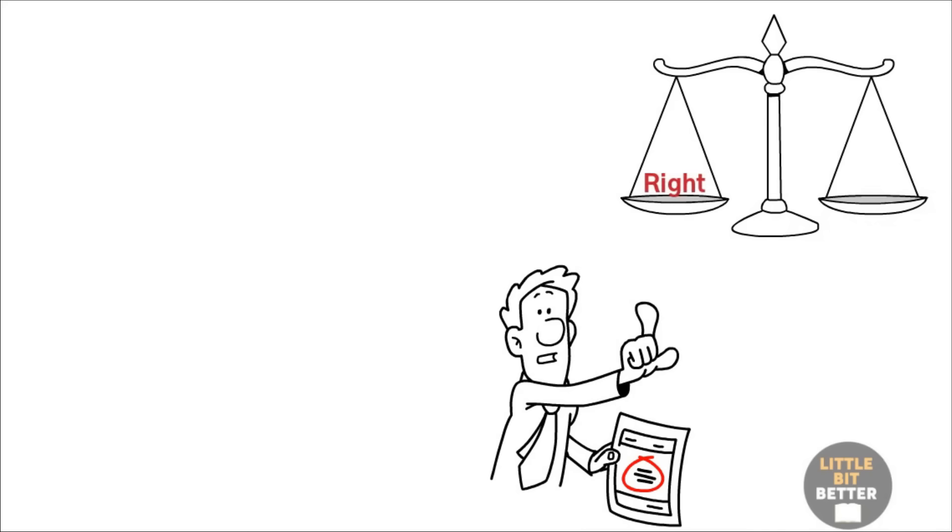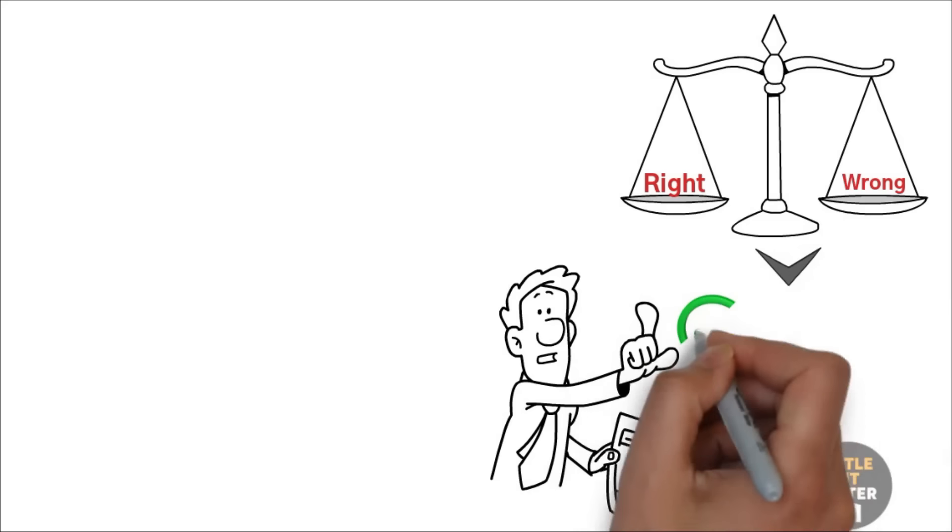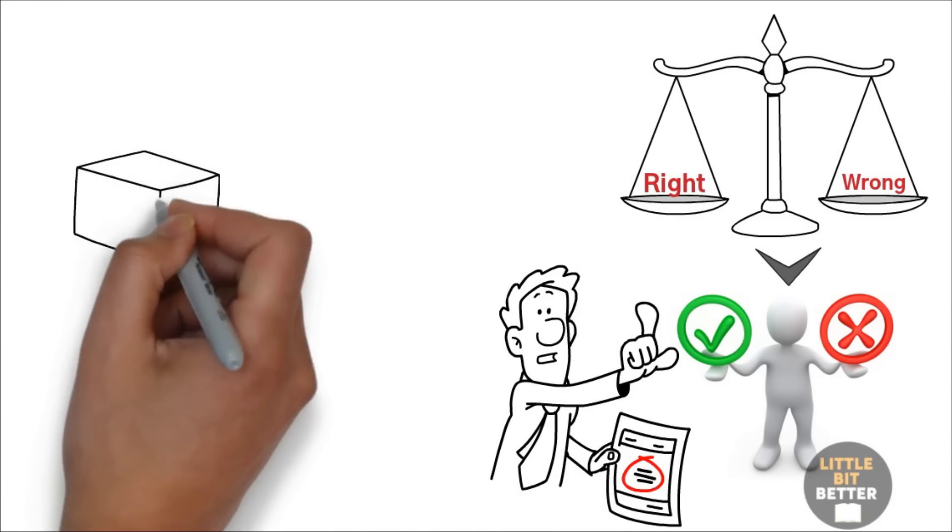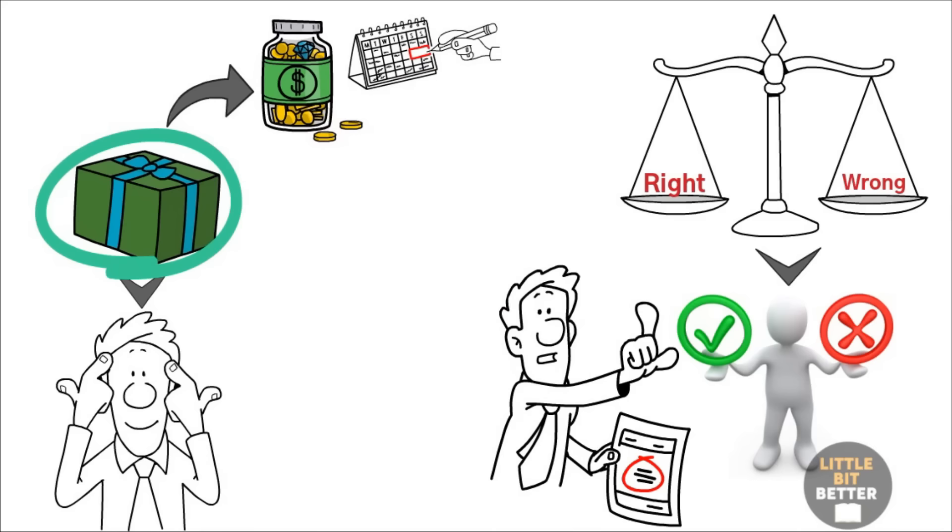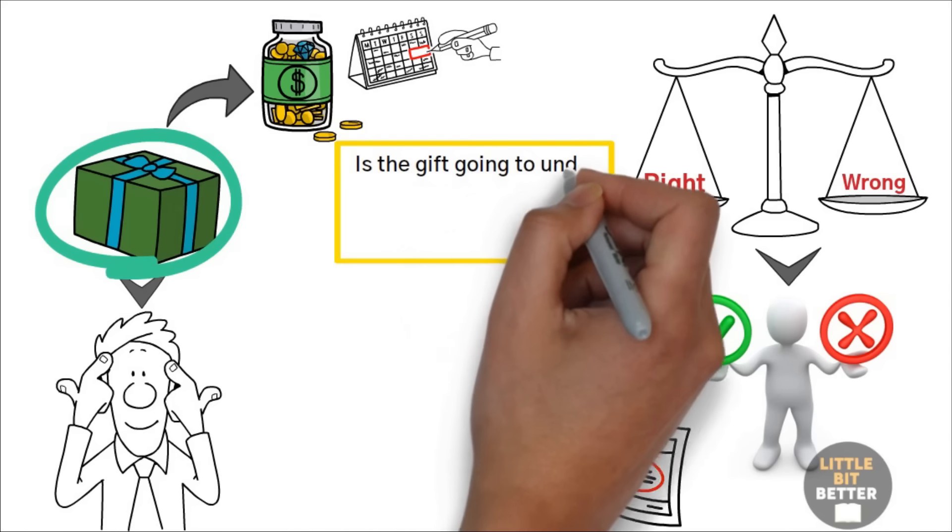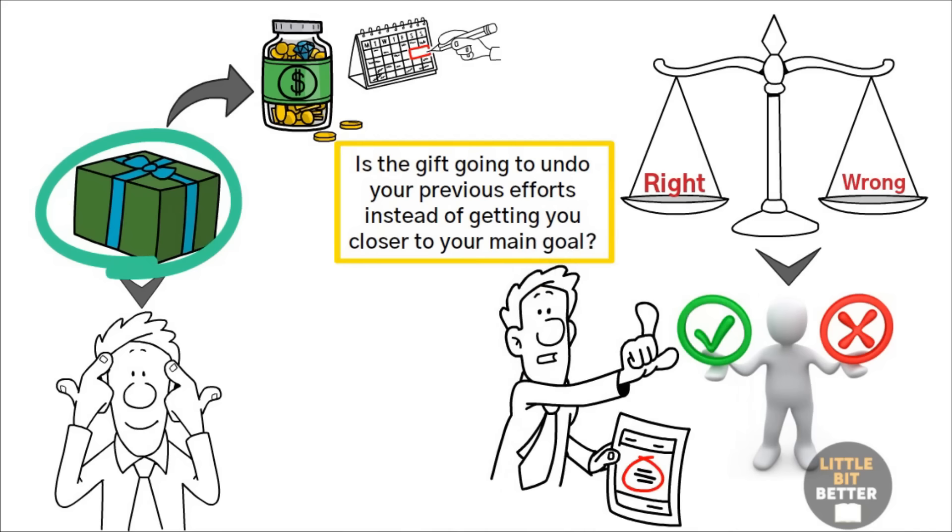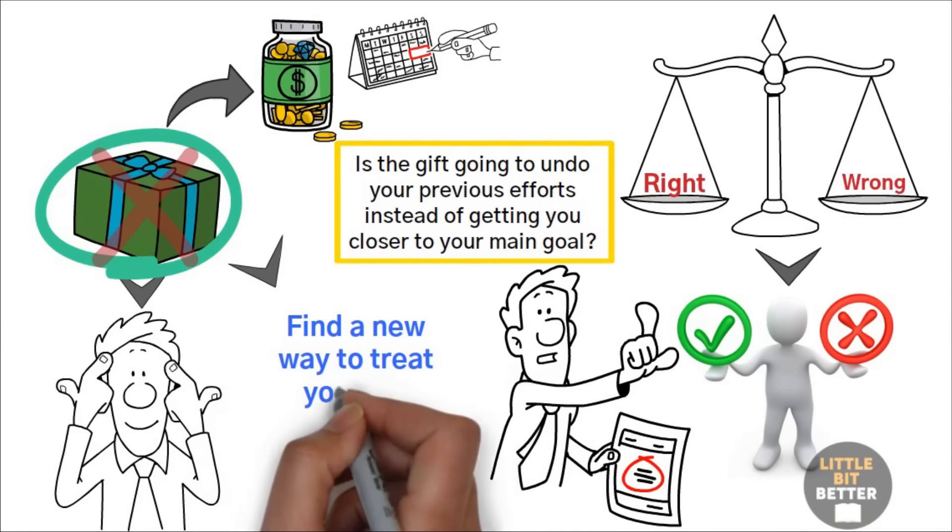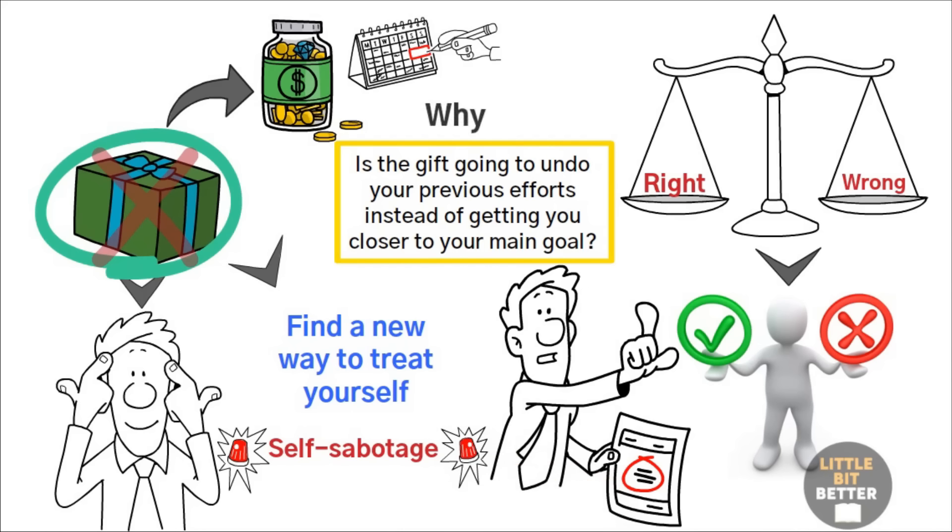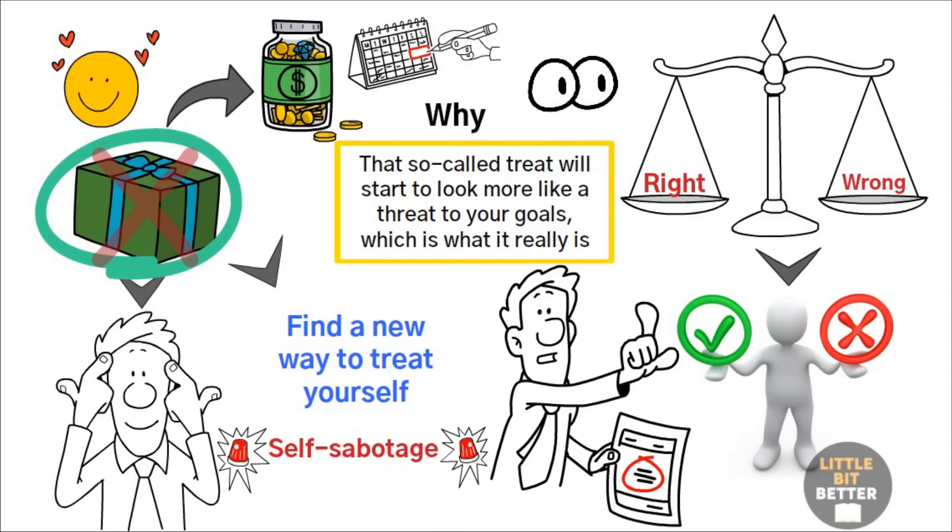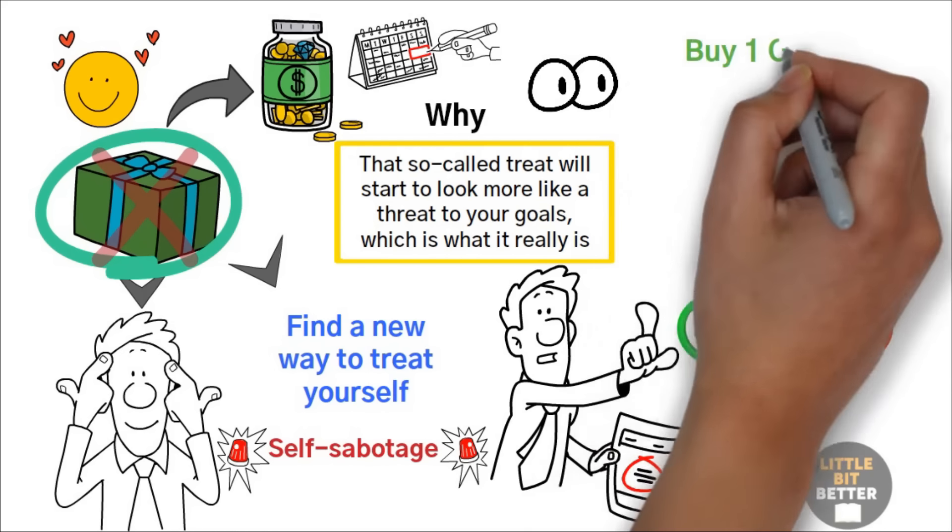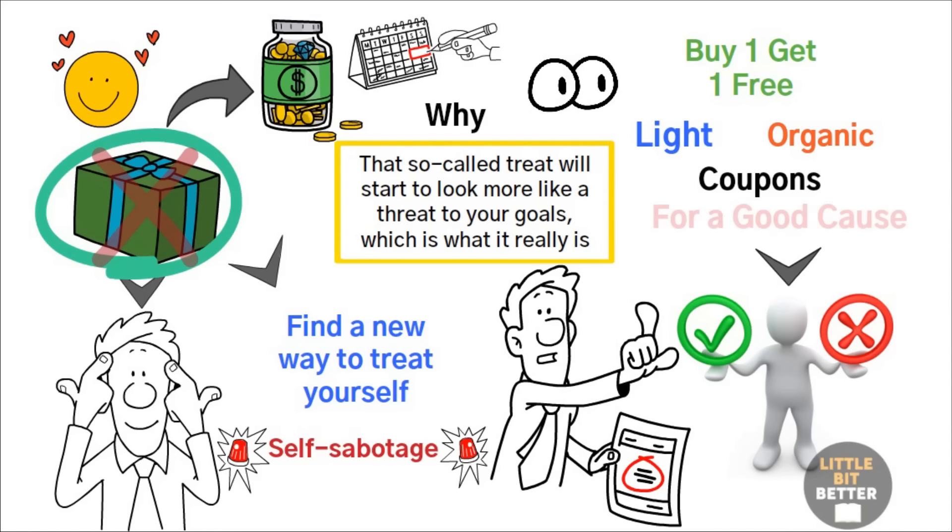It convinces you that self-sabotaging is actually something good. Ask yourself, do you use your good behavior to give yourself permission to do something that will sabotage your larger willpower goals? If you do, here's how to stop. First, avoid thinking in terms of right or wrong. Just think in terms of things that help you reach your goals and things that don't. When you think about giving yourself a treat for behaving, remember why you've been resisting. For example, if you want to buy yourself a gift to celebrate the fact that you've saved money this week, remind yourself about why you were saving money in the first place. Is the gift going to undo your previous efforts instead of getting you closer to your main goal? If it will, forget it and find a new way to treat yourself that doesn't count as self-sabotage. Remembering the why works because it changes how you feel about the reward. That so-called treat will start to look more like a threat to your goals, which is what it really is. Also, keep both eyes open for magic words that might give you permission to indulge like, buy one, get one free, light, organic, coupons, or for a good cause.